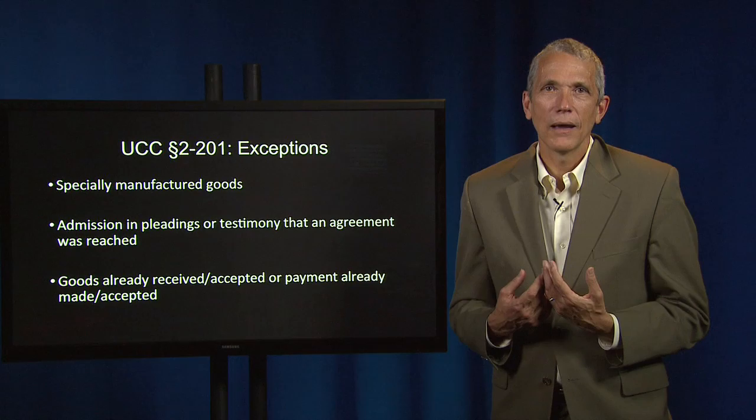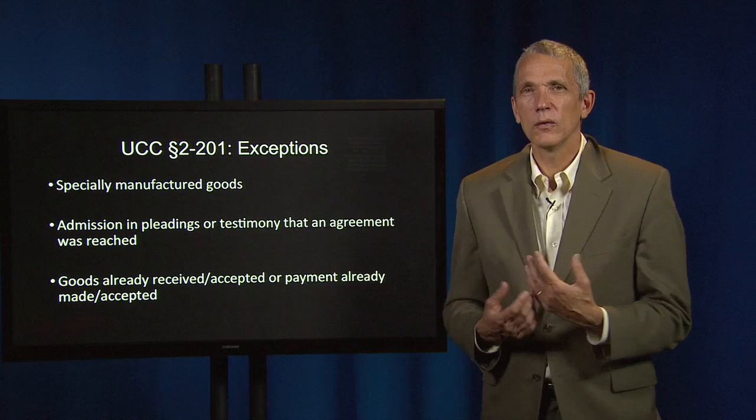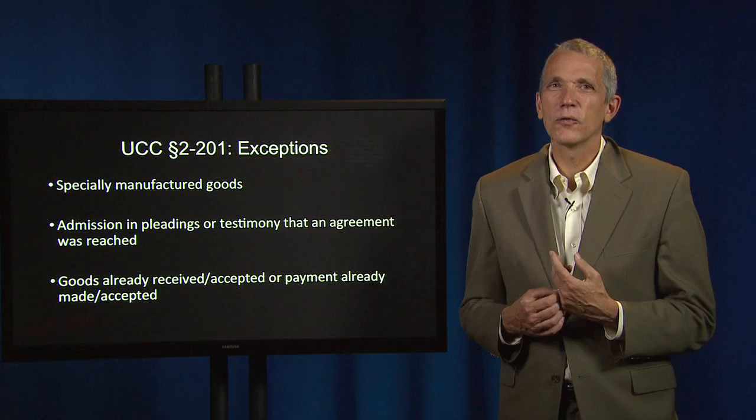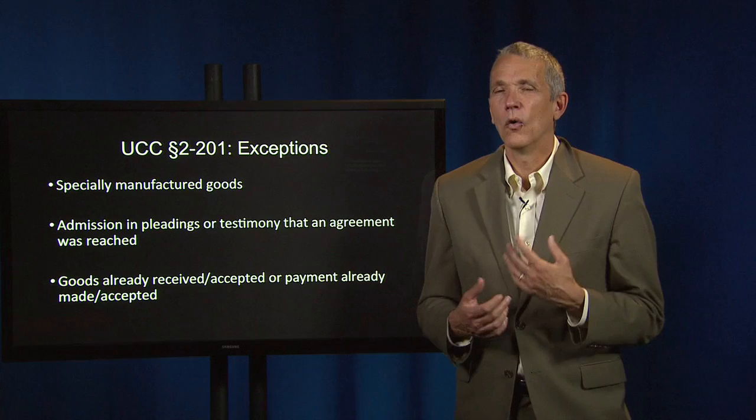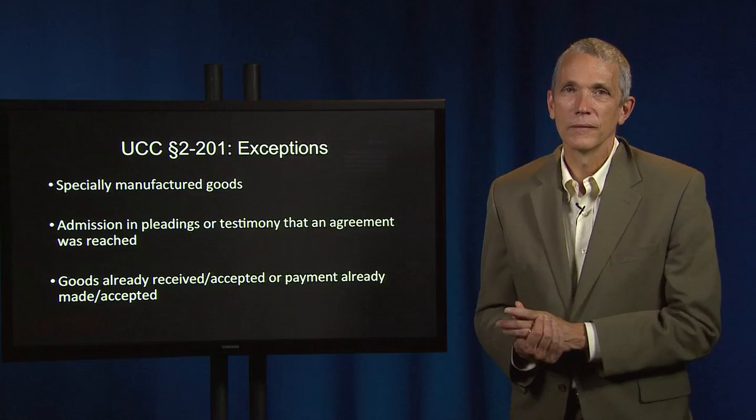Admitting that a contract was made and a buyer's payment or acceptance of goods is a fairly good substitute for a buyer's signature, but specially manufactured goods might substitute for a seller's signature as an indication that the seller must have thought there was a contract, or they wouldn't have produced these specially manufactured goods.